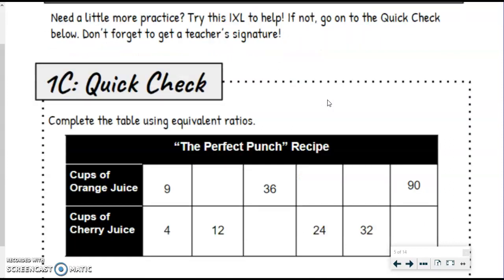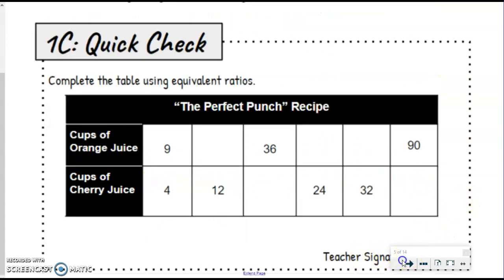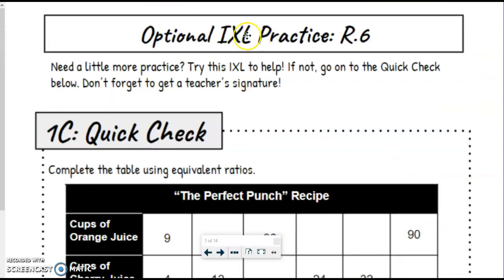If you feel like you know how to do these because you know your equivalent ratios, great. Go straight to the quick check and go ahead and fill in the table and get your teacher signature. But if you would like a little bit of practice, feel free to do that. You could always do the quick check and then maybe try that practice afterwards if you'd like to.